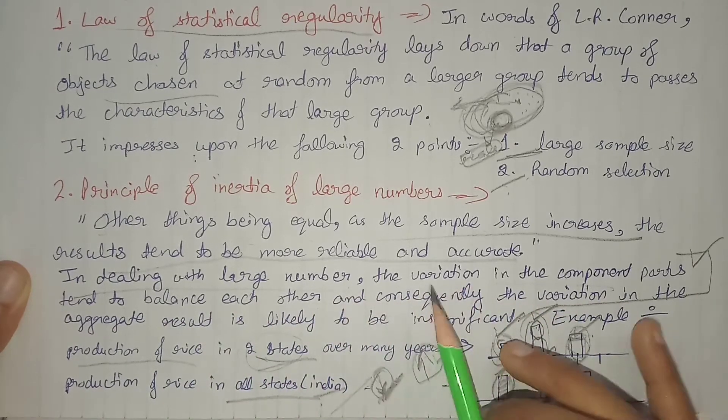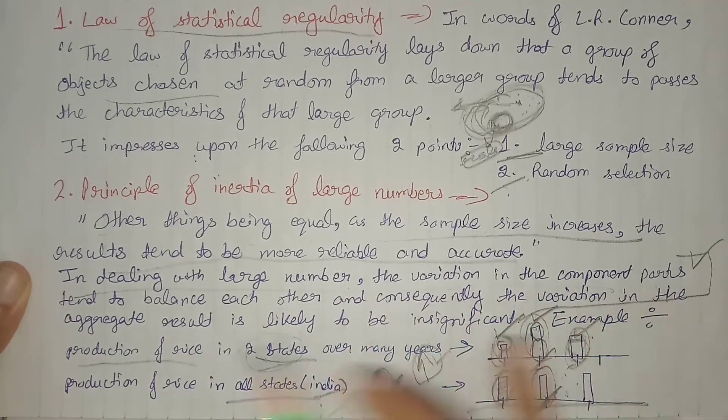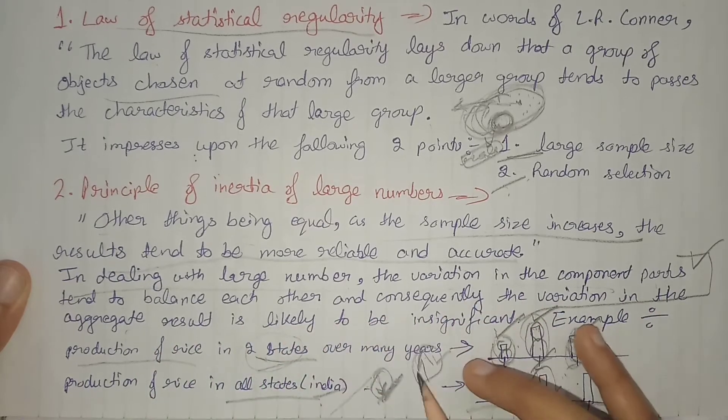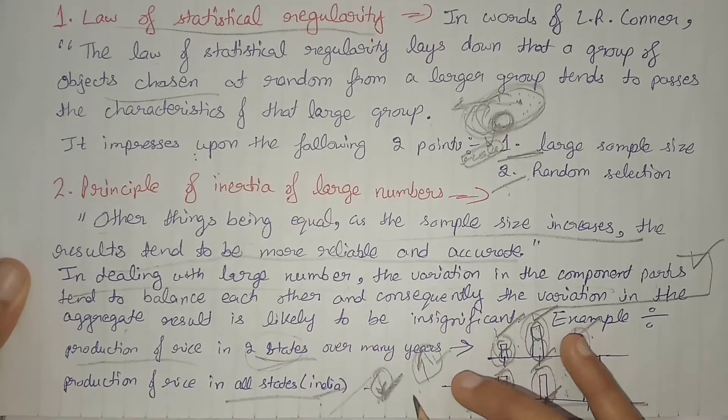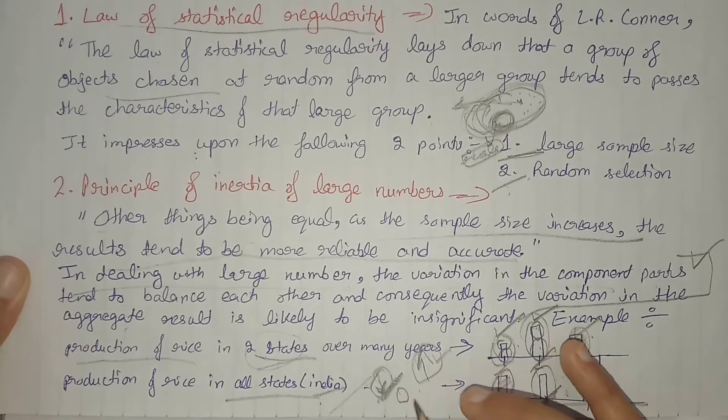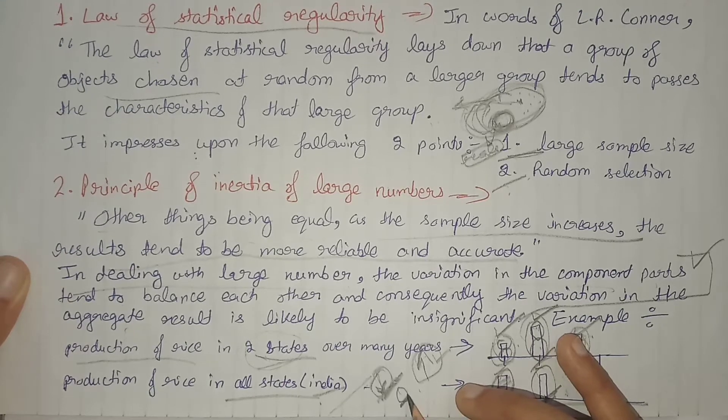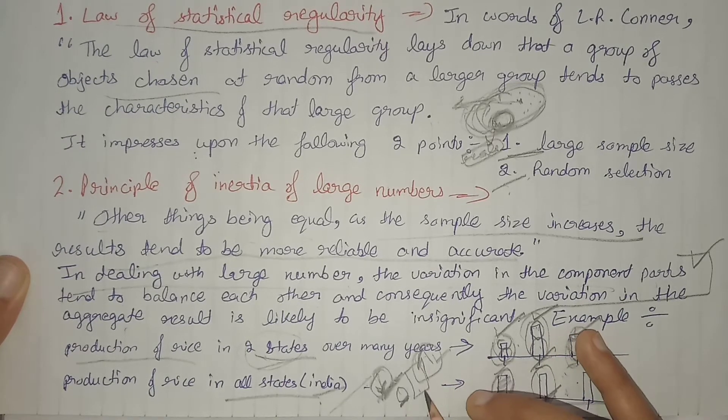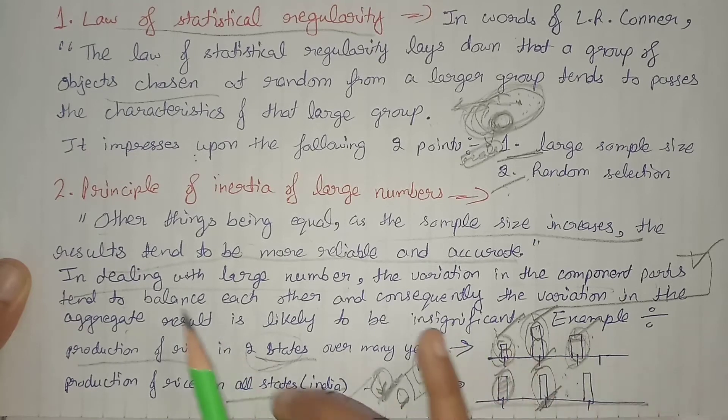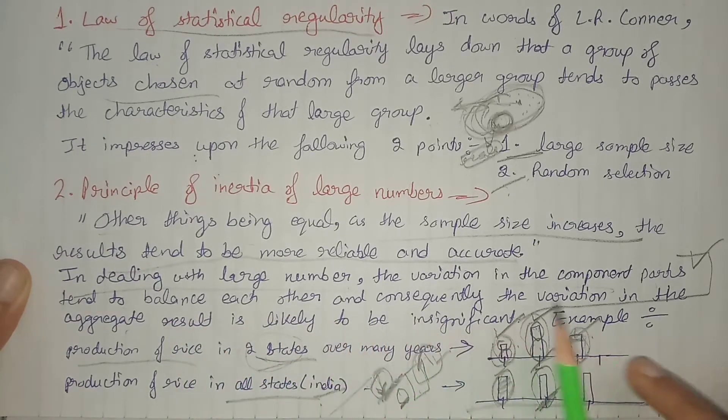So the overall total will remain normal and we won't see much variation. This is stated as: in dealing with large numbers, the variation in the component parts tend to balance each other, and consequently the variation in the aggregate result is likely to be insignificant.